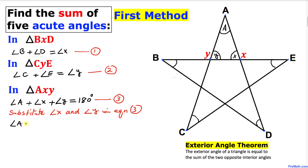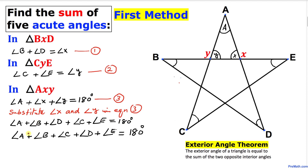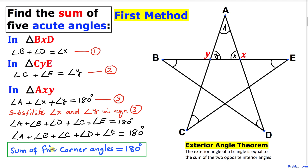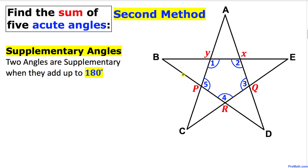So equation number three simply becomes: angle A plus angle B plus angle D plus angle C plus angle E equals 180 degrees. Rearranging these: angle A plus angle B plus angle C plus angle D plus angle E equals 180 degrees. Thus we have proven that the sum of the five corner angles equals 180 degrees.